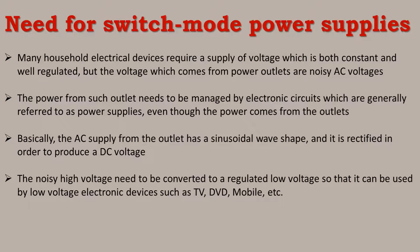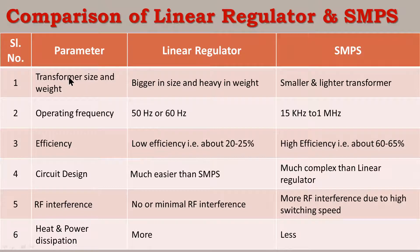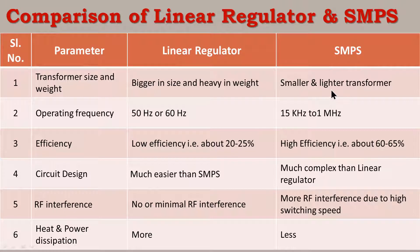Now let us compare the linear regulator and SMPS. The first parameter is transformer size and weight. In a linear regulator, the transformer is large in size and heavy in weight. In SMPS, the transformer is smaller and lighter. The second parameter is operating frequency. A linear regulator operates at only 50 Hz or 60 Hz AC. SMPS operates at up to 50 kHz to 1 MHz operating frequency.